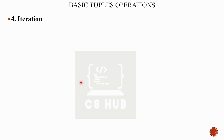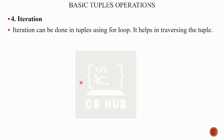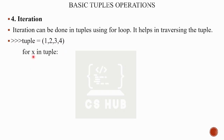Iteration — tuples can be iterated using a for loop, which helps in traversing the tuple. For example, tuple = (1, 2, 3, 4). A for loop has initialization, test, and update. The syntax is: for x in tuple — where x is the loop control variable. This iterates through each element of the tuple.